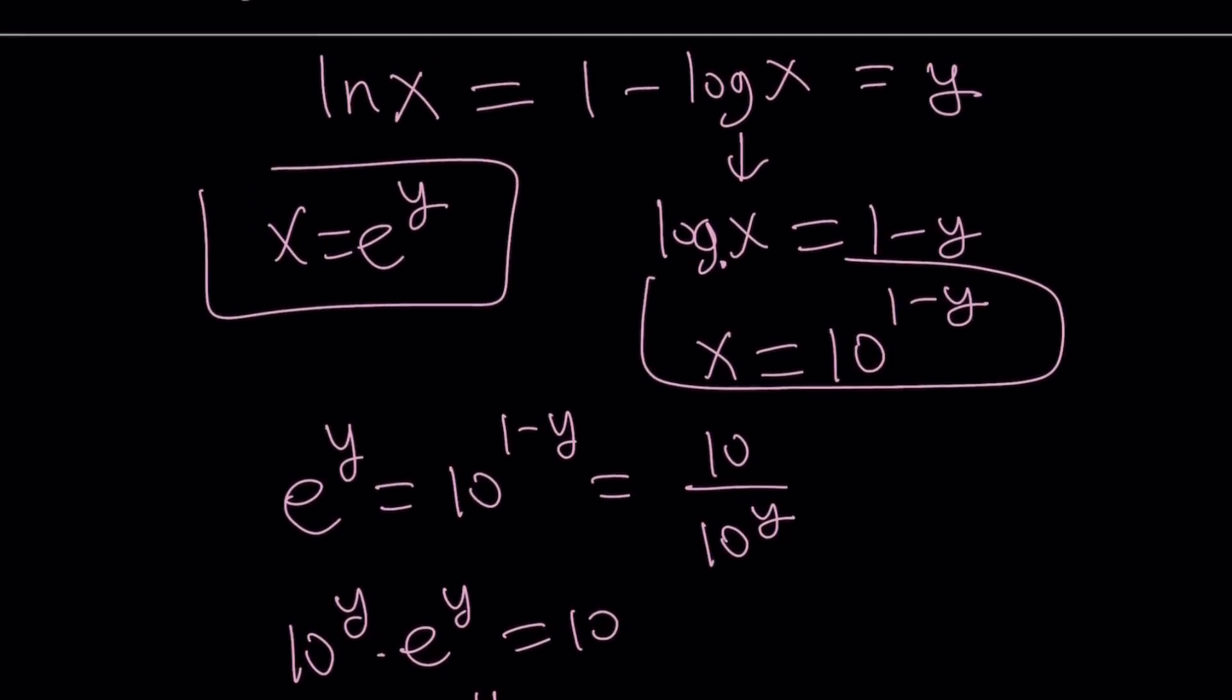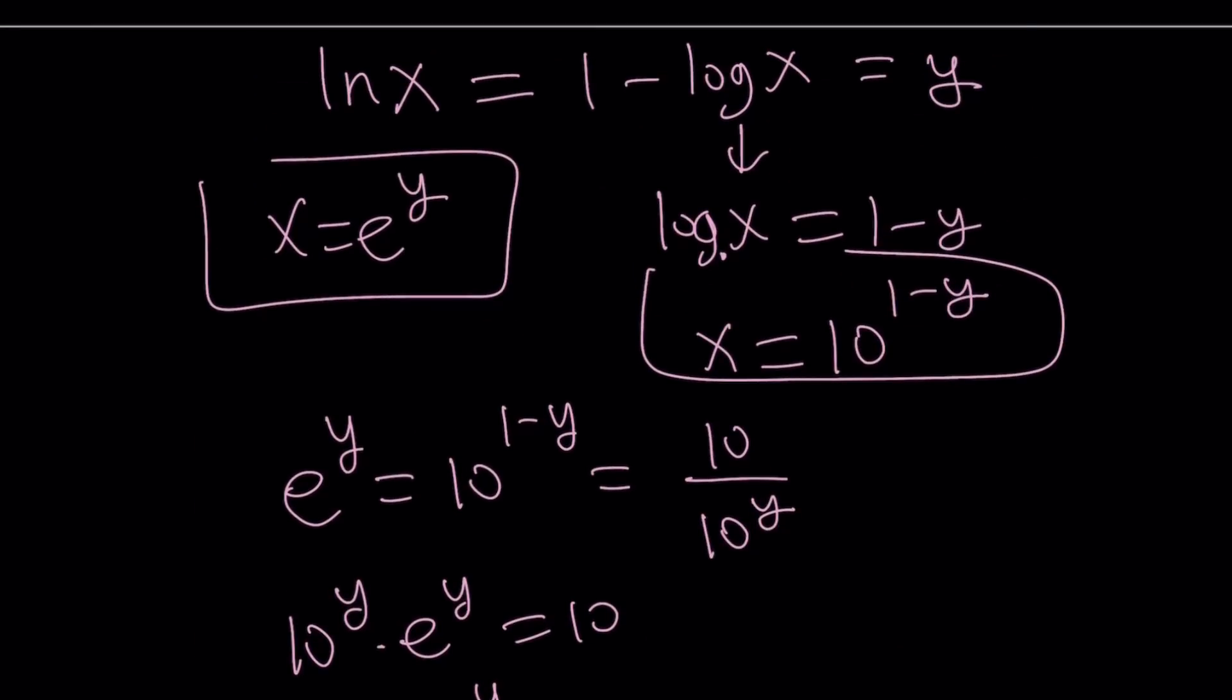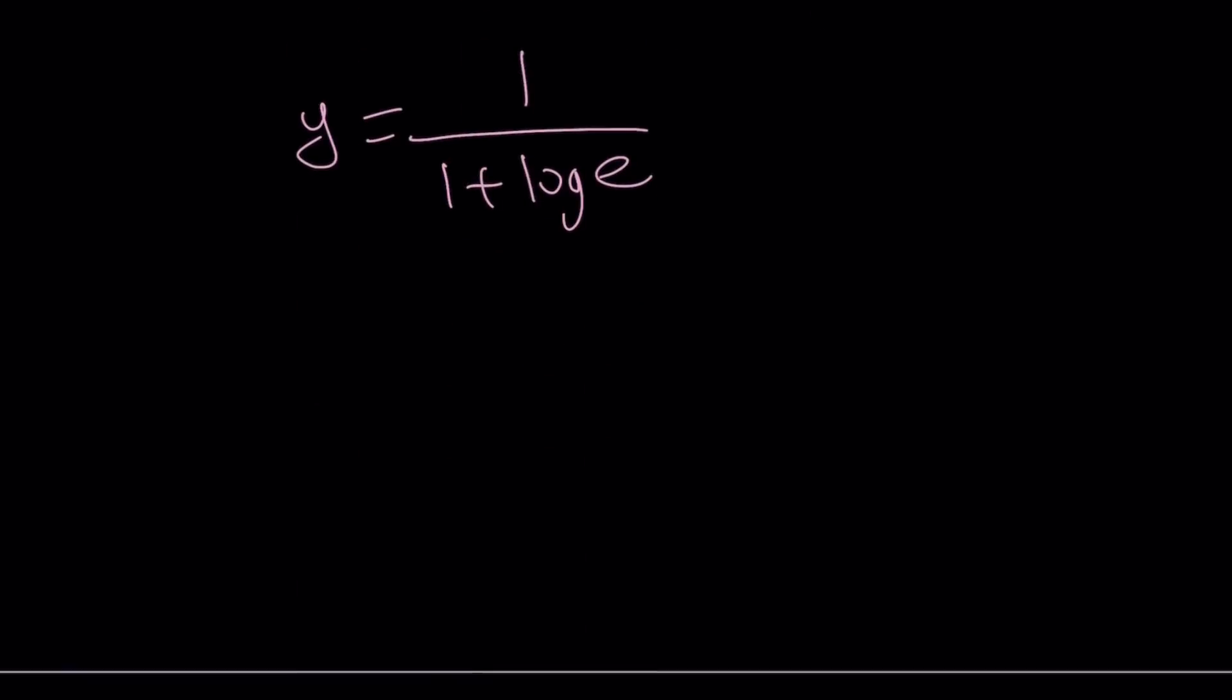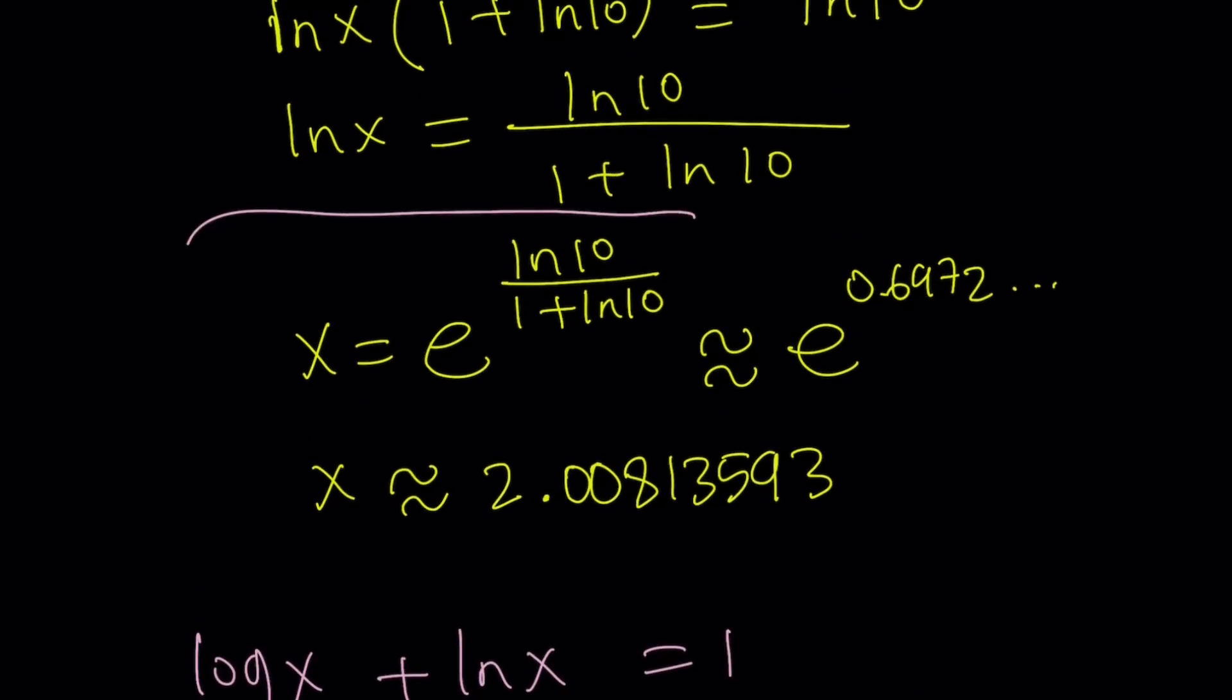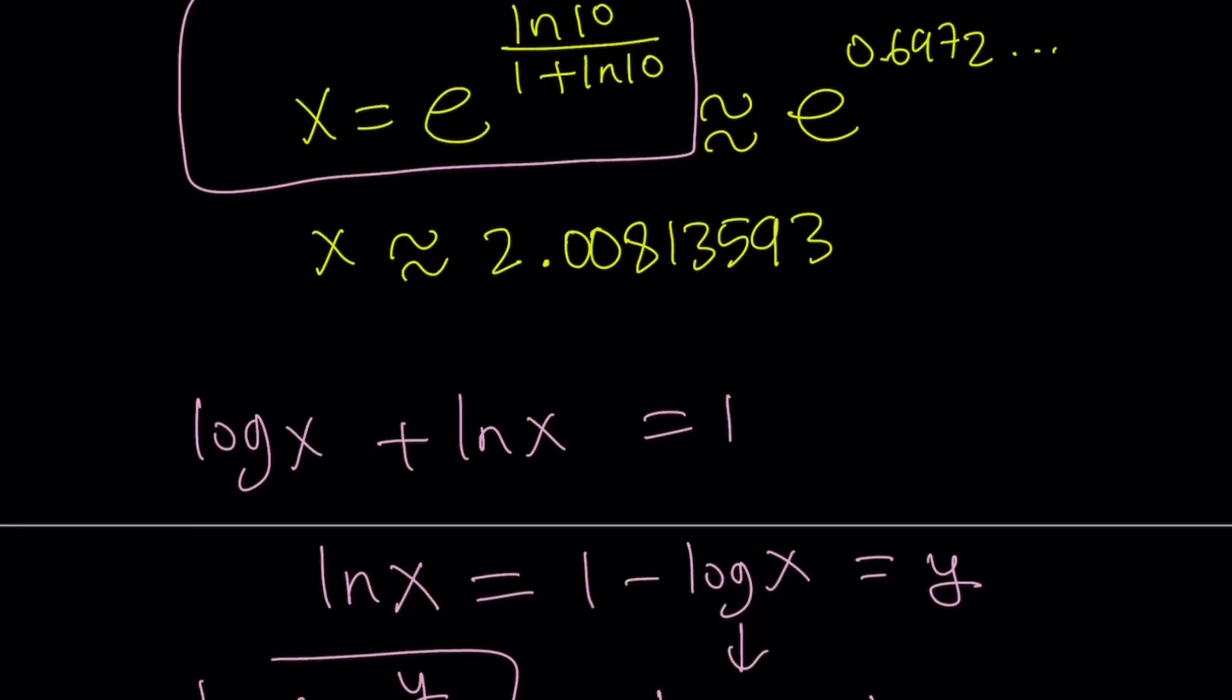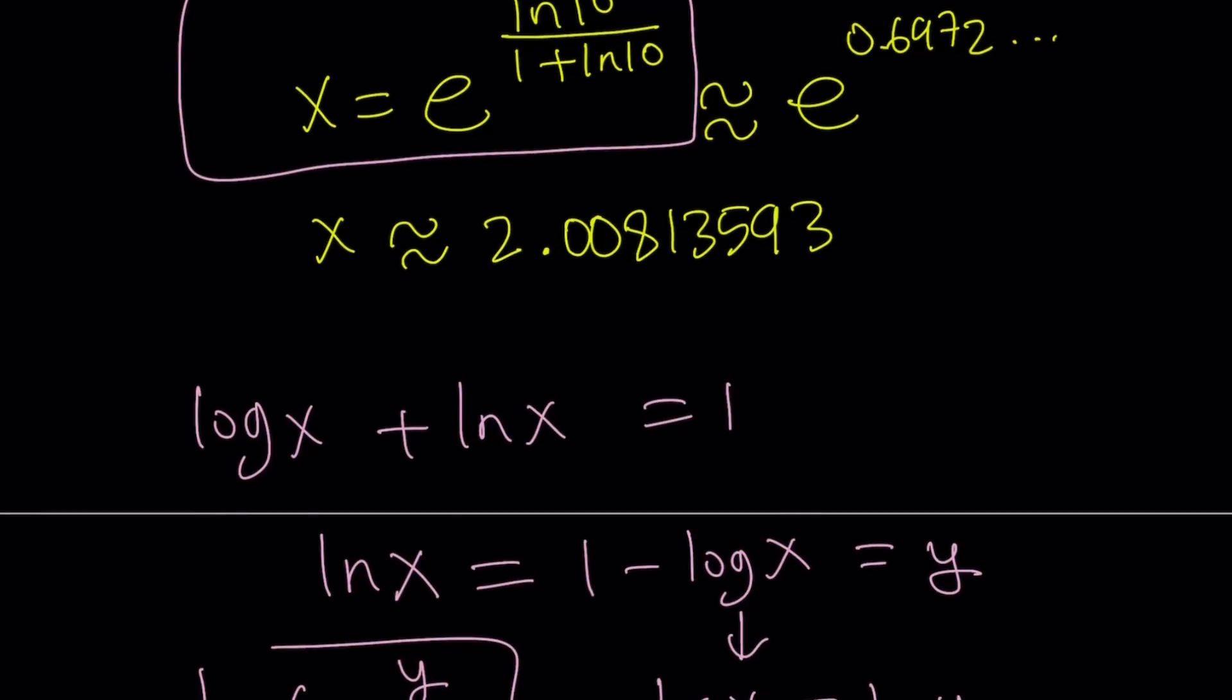So y can be written as 1 over 1 plus log e. So that could also work for y. But what is y? Y is... y is ln x. ln x is equal to y. So this is ln x, which means x can be written as e to the power 1 over 1 plus log e. Again, when I write log, it's base 10. Wait, I didn't get that answer first. I had a different answer using the first method, right? It was e to the power ln 10 over 1 plus ln 10. So why are they different?